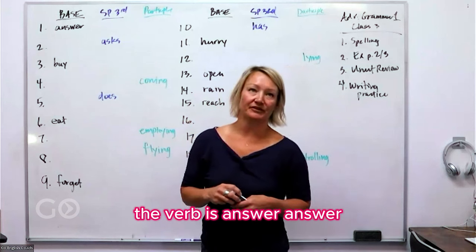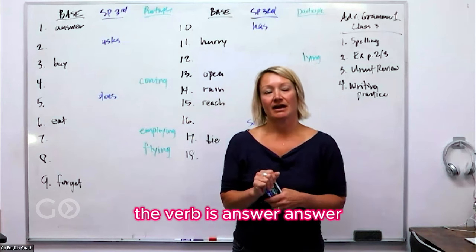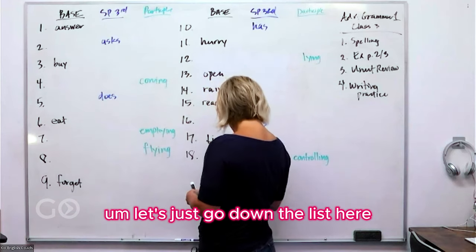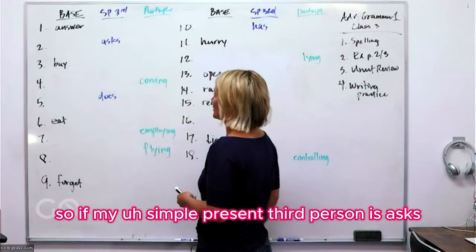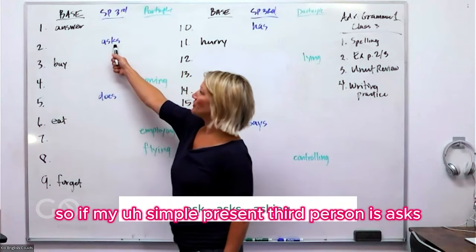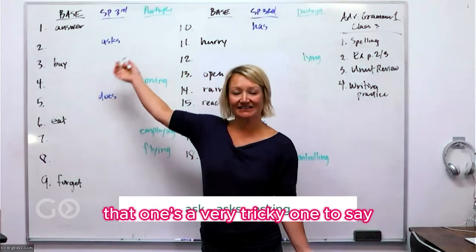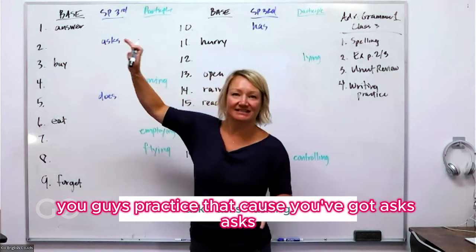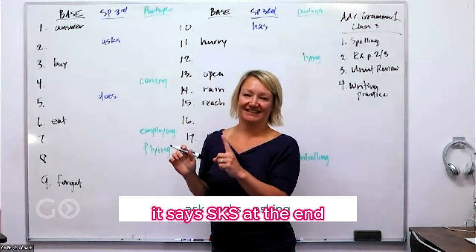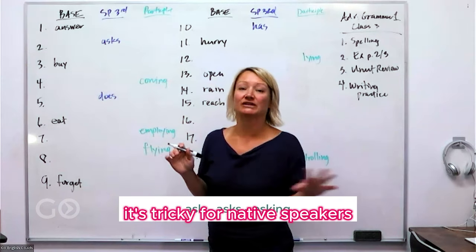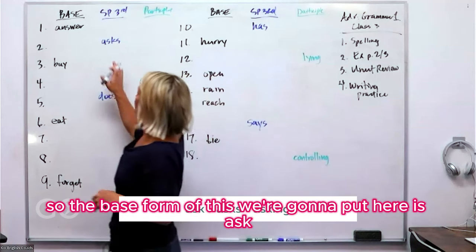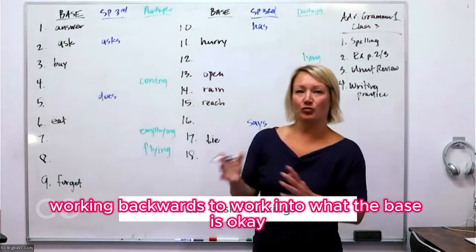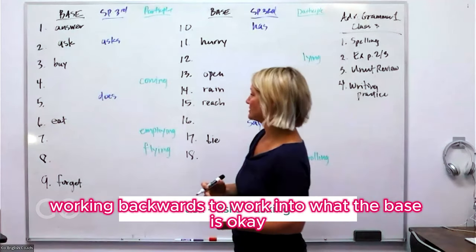So let's start with our first one. The verb is 'answer' — that's the base form. Going down the list, the simple present third person is 'asks,' which is a very tricky one to say. Practice that because you've got A-S-K-S at the end, and that could be very tricky. It's tricky for native speakers too. So the base form here is simply 'ask.' We're kind of working backwards to find what the base is.